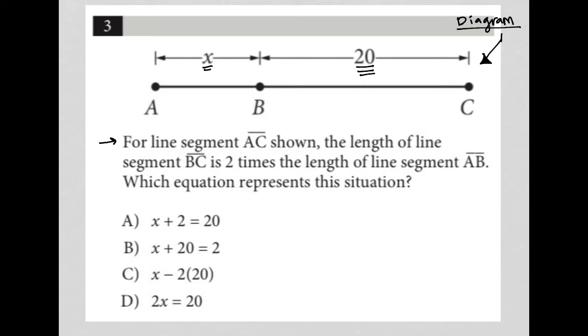So in essence, when I read that line, that sounds a lot like what I typically see in a translate word problem question. In which case, I can take these exact words: length of line segment BC, 20, is (always means equals), two times, so two, the length of line segment AB, which was X, so two times X would just be 2X. So that is the translation of what I just read.